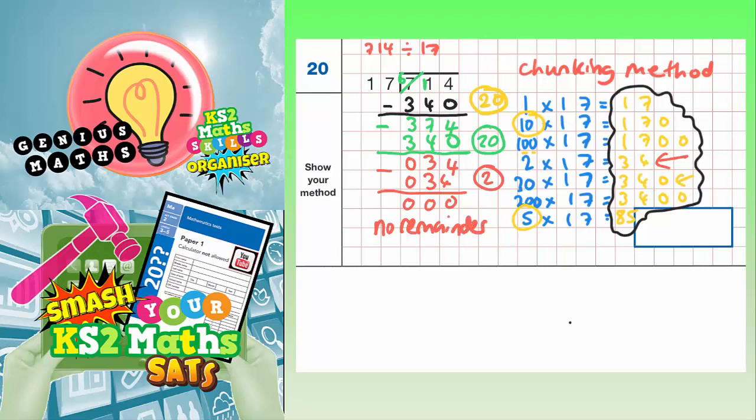So what I've done is I've repeatedly subtracted chunks of 17 from 714 until there's nothing left. And all I have to do now is add up my chunks. Well, my chunks are here: 20, a chunk of 20, a chunk of 20, and a chunk of 2. So if I add these together, 20 plus 20 plus 2, 20 plus 20 plus 2 makes 42. So all together, I subtracted 42 17s from 714. So my final answer is 42.